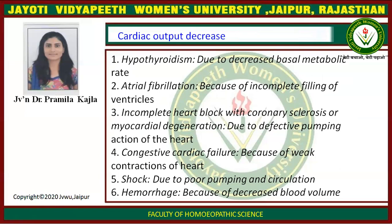In the following conditions cardiac output decreases. First is hypothyroidism due to decreased basal metabolic rate. In atrial fibrillation, because of incomplete filling of ventricles, cardiac output decreases. Third is incomplete heart block with coronary sclerosis or myocardial degeneration due to defective pumping action of the heart. In congestive cardiac failure, because of weak contraction of the heart, cardiac output decreases. In shock conditions due to poor pumping and circulation, and in hemorrhage due to decreased blood volume, cardiac output decreases.